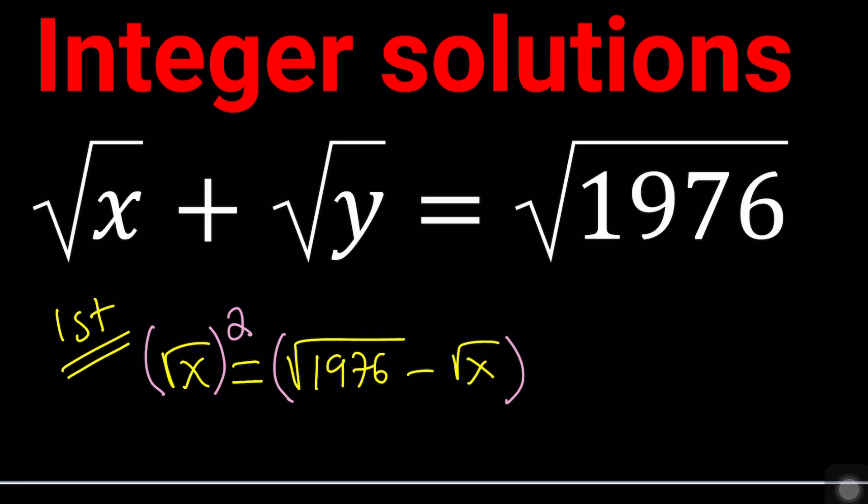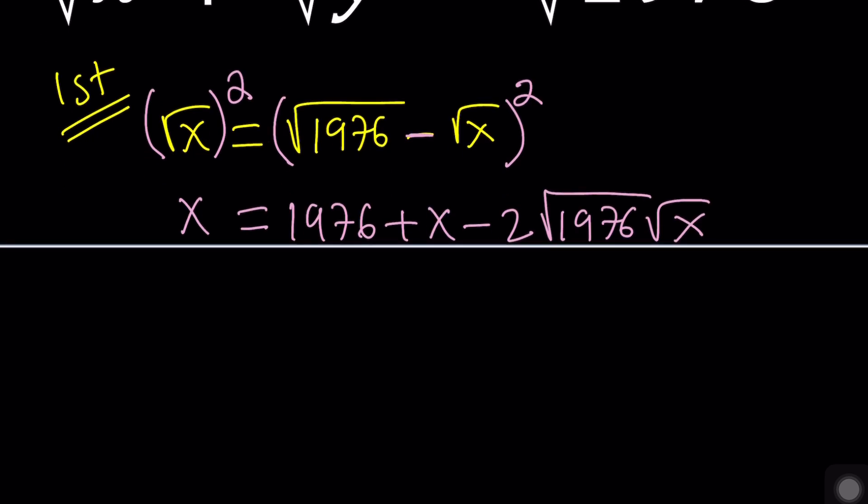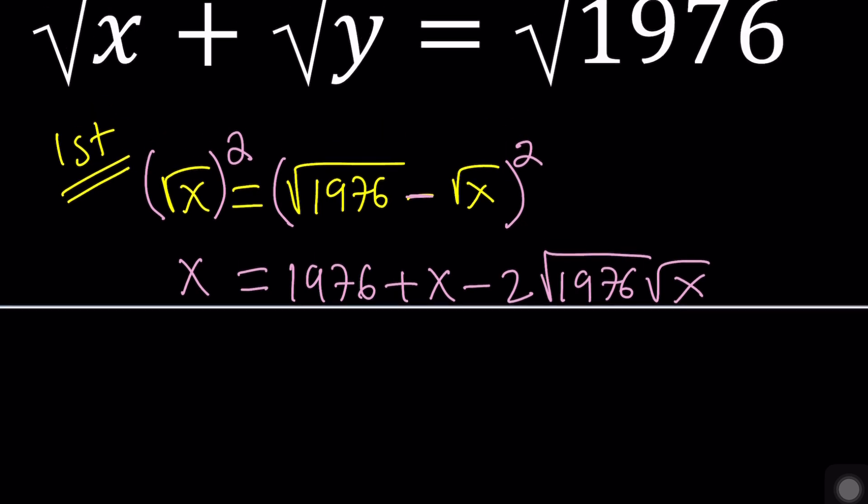On the left we're going to have x and on the right hand side we're squaring a difference. So a squared minus 2ab plus b squared, right? Okay we can go ahead. I probably messed up somewhere. Oh yeah one of these should be a y. So this is a y and this should be a y as well and this should be a y as well.